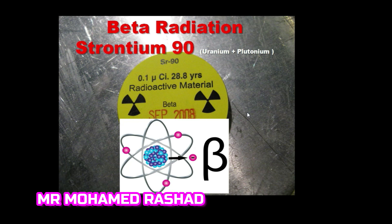The source of beta radiation can vary, but one of the most common elements emitting beta radiation is strontium-90, which is a metallic element formed from uranium and plutonium. This is the most common source of beta radiation used in medicine, although there are other elements.